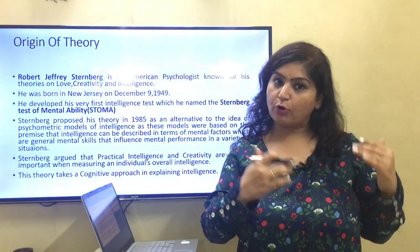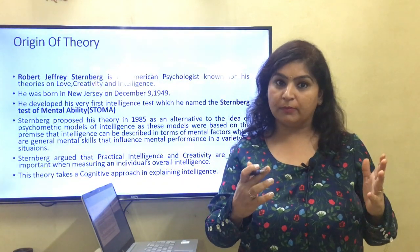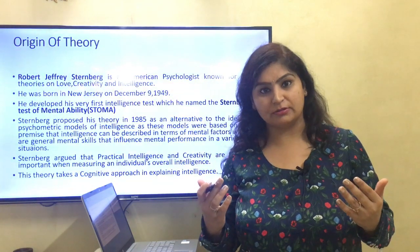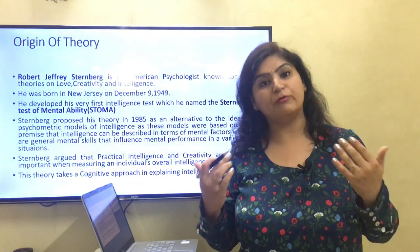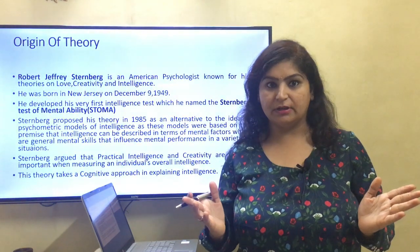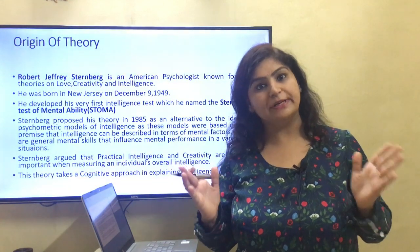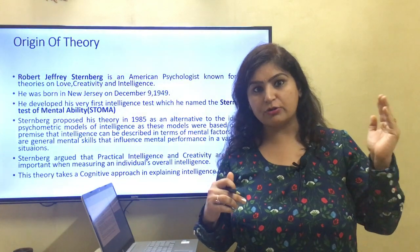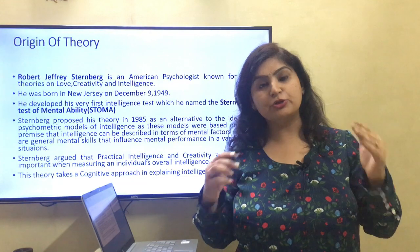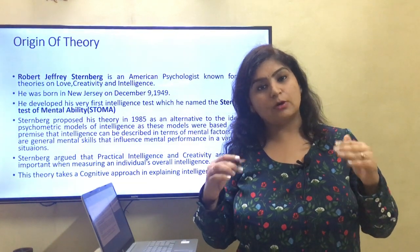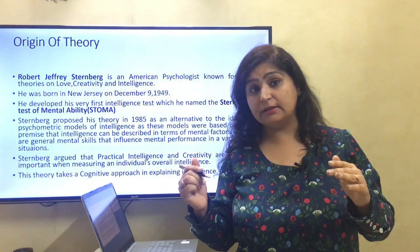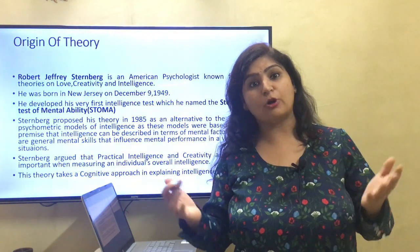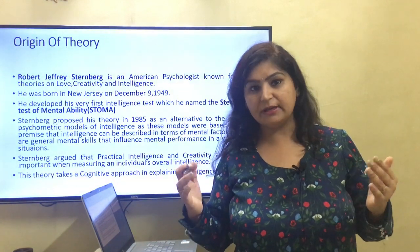So in this way he was different from psychometric theorists. Psychometric theorists talked about structure of intelligence and used statistical analysis called factor analysis. But Sternberg took a cognitive approach — how we process information, how we acquire it, how we retain it.